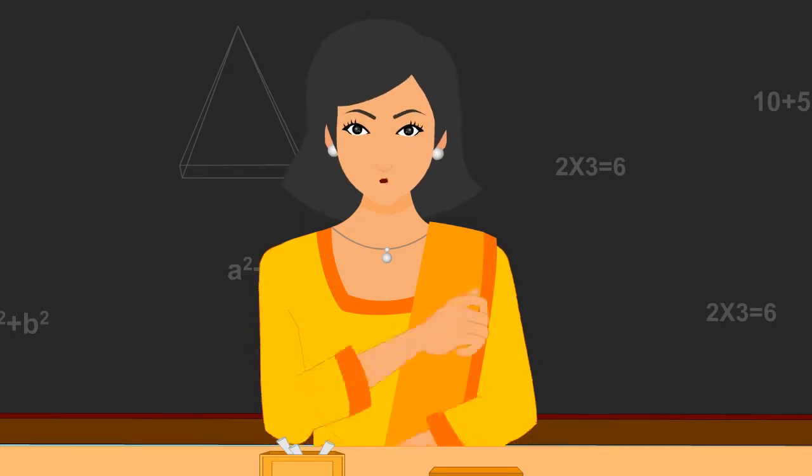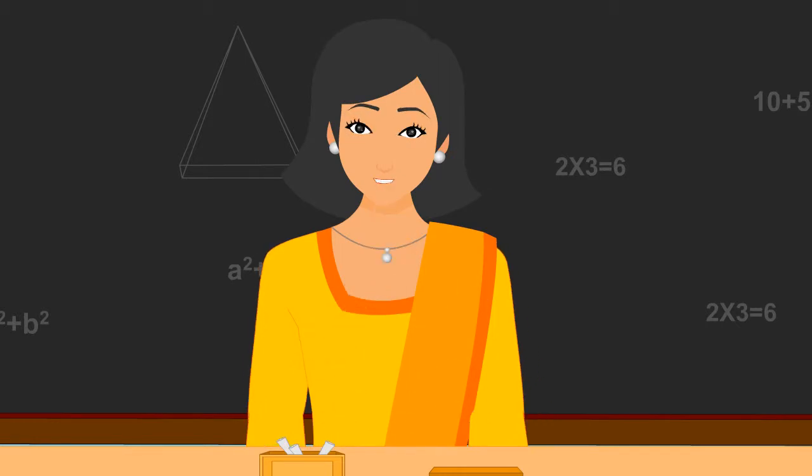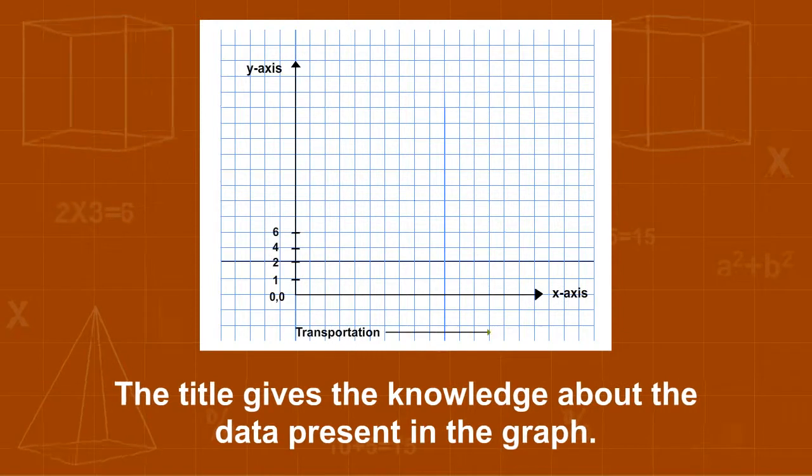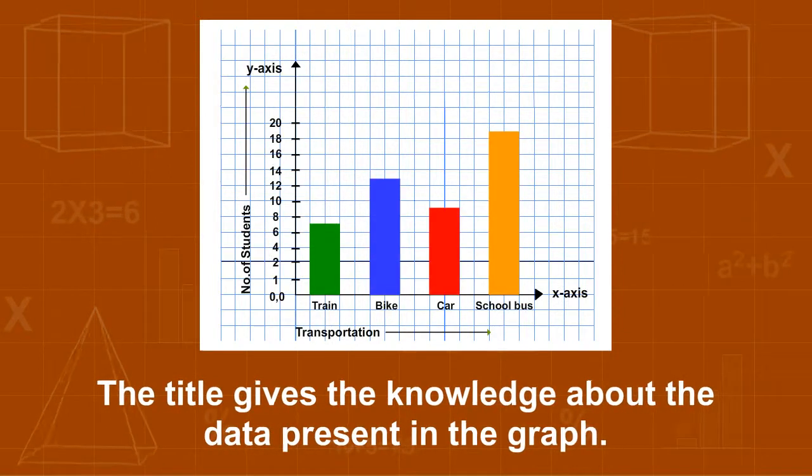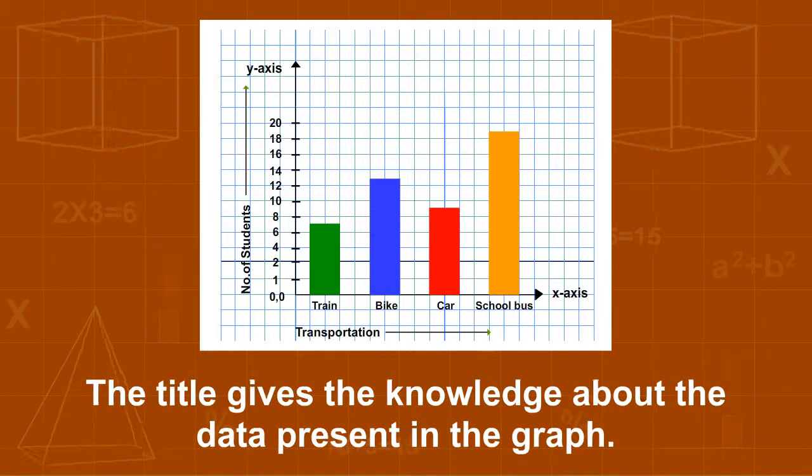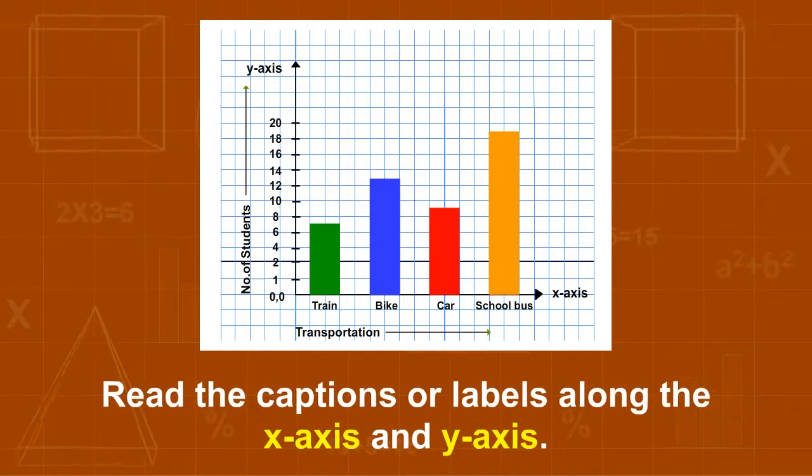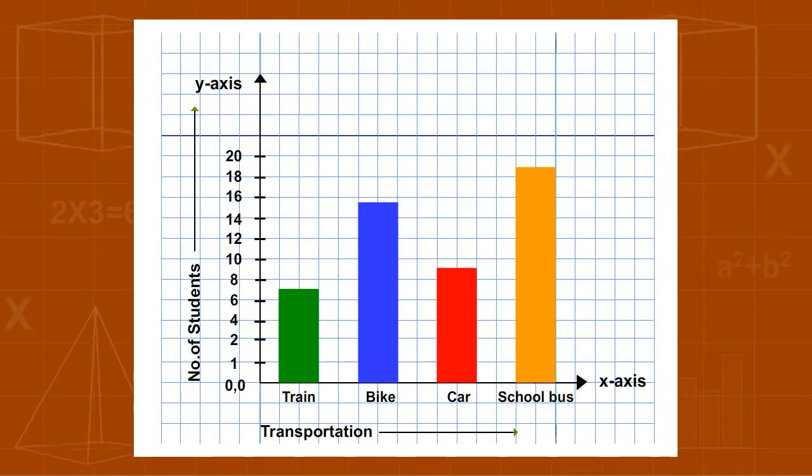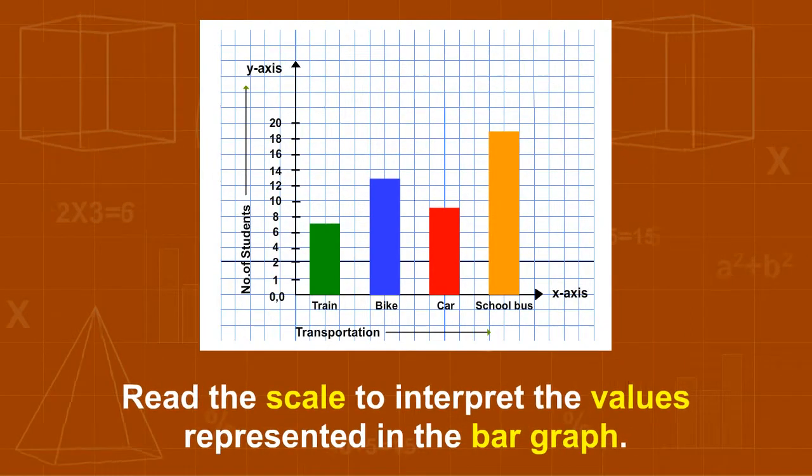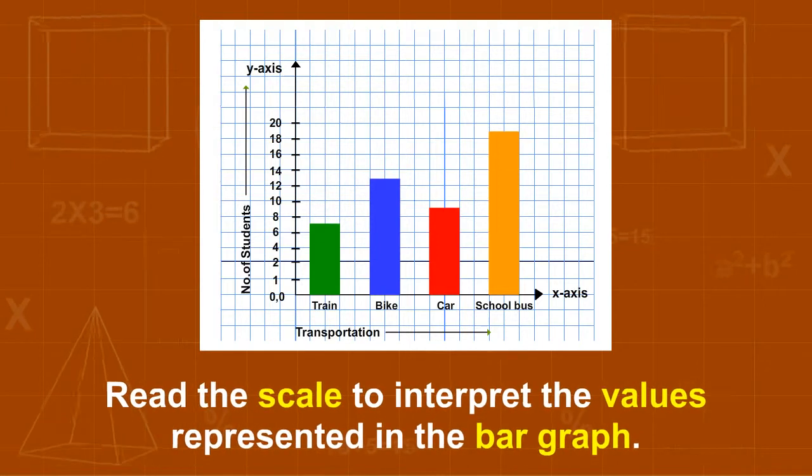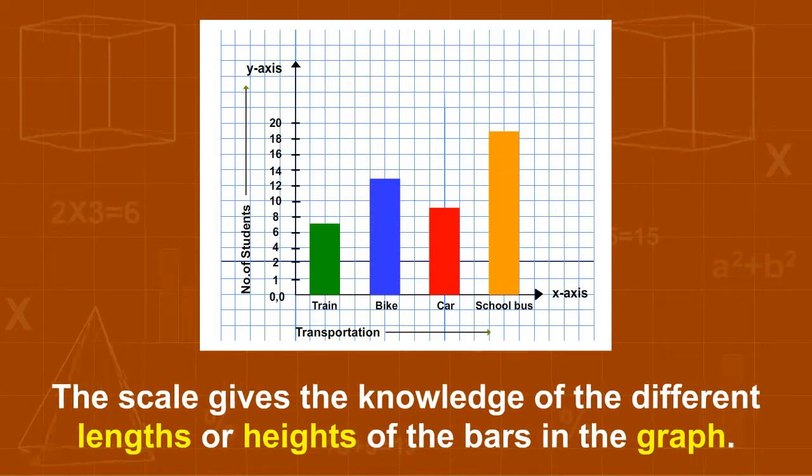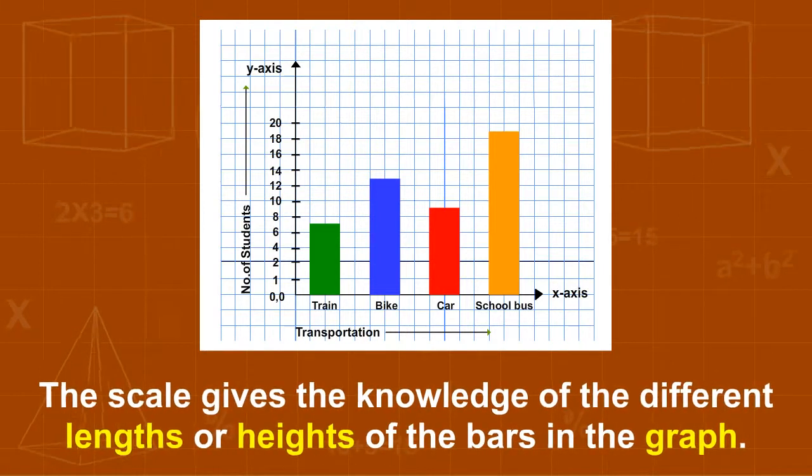Now, what if a bar graph is given and you have to read it and find the required data? Here are the simple steps to read the bar graph. Understand the title of the bar graph. The title gives knowledge about the data present in the graph. Read the captions or labels along the x-axis and y-axis. This tells us about the terms. The data has been represented. Read the scale to interpret the values represented in the bar graph. The scale gives knowledge of the different lengths or heights of the bars in the graph.